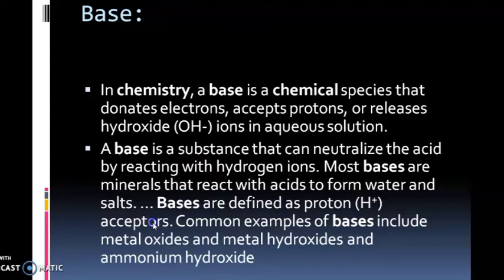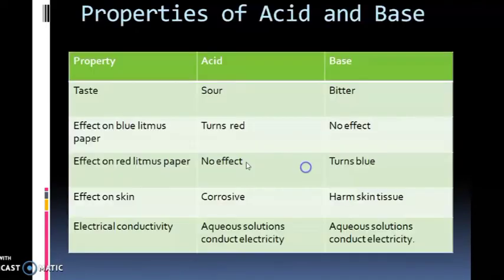Common examples of bases are metal oxides and metal hydroxides, such as aluminum hydroxide, sodium hydroxide, and potassium hydroxide. Now we can look at some properties of acids and bases.